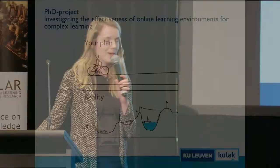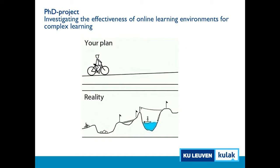I want to situate my research paper in the broader context. The title of my PhD project is 'Investigating the Effectiveness of Online Learning Environments for Complex Learning.' Complex learning is very important because those are skills we need as students in future life. When I first worked at the university, PhDs looked easy. But now, doing the research myself, I see it's more like a lot of pitfalls and obstacles. It's really important that we learn to deal with unpredictable situations with the right attitudes, knowledge, and skills.